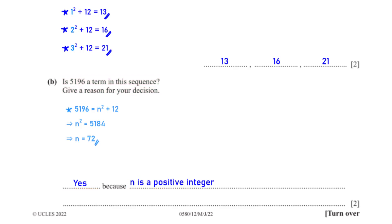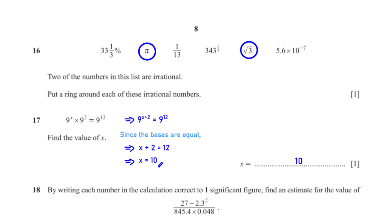Two of the numbers in this list are irrational. Put a ring around each irrational number. An irrational number is any number that cannot be expressed as a fraction. From the list, the irrational numbers are π and √3.